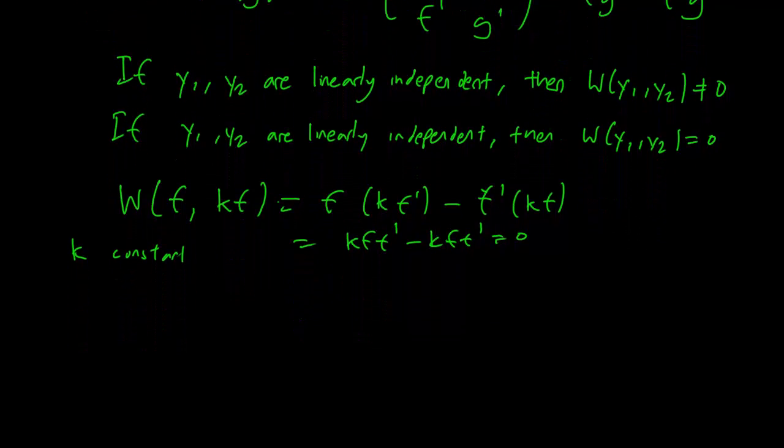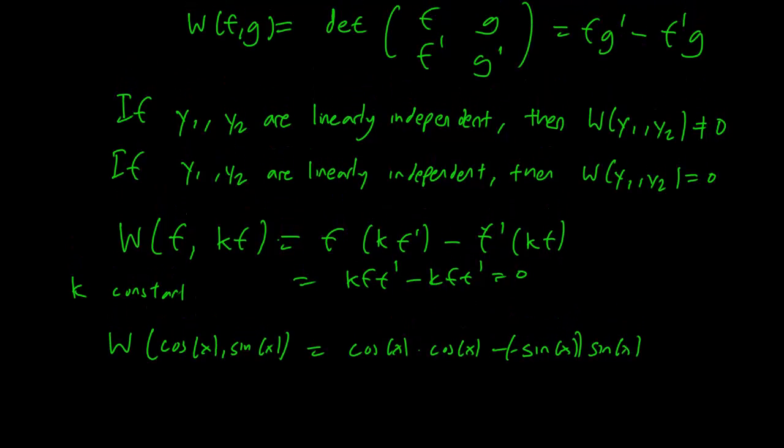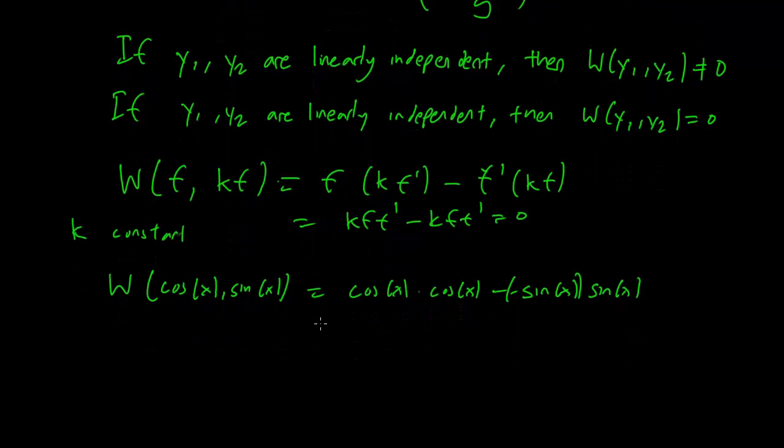Pretty easy to see. Another example is to look at W of cosine x and sine x. You get that this is going to be cosine x times cosine x minus minus sine x times sine x. The derivative of cosine is minus sine, the derivative of sine is cosine, so that's how we get all these figures. But this is just going to be cosine squared x plus sine squared x equals one, which is very not zero. So the Wronskian is one easy way to check if your two functions are linearly independent.